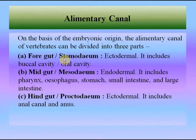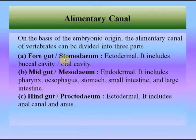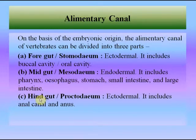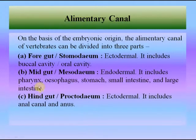The foregut, or stomodeum, is the anterior part of the alimentary canal from the mouth to the duodenum. The anterior portion of the mouth develops from an ectodermal depression called the stomodeum, and at the caudal end on the ventral aspect of the curving tail region is another ectodermal depression called the proctodeum. The midgut is of endodermal origin and includes pharynx, esophagus, stomach, small intestine, and large intestine. The foregut includes the buccal cavity and esophagus; the midgut includes pharynx, esophagus, stomach, small intestine, and large intestine; and the hindgut includes only the anal canal and anus.